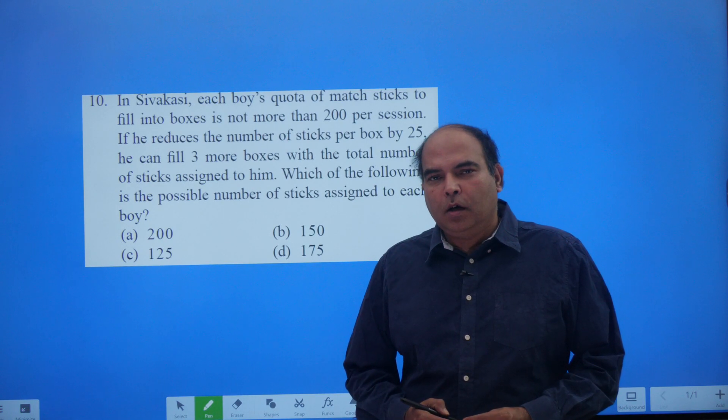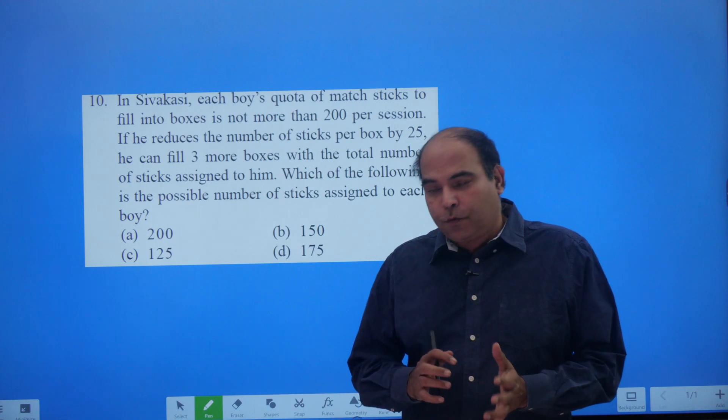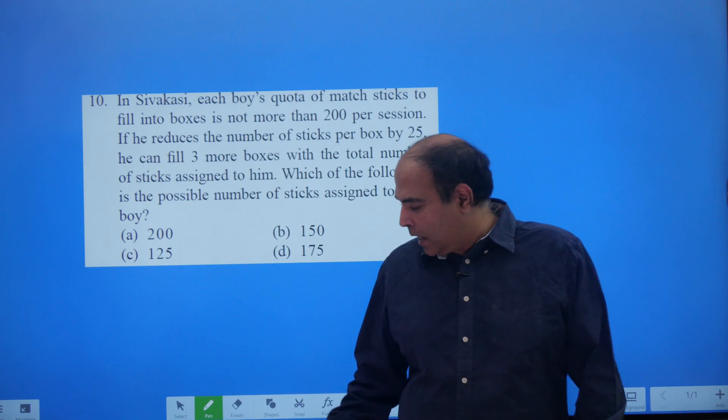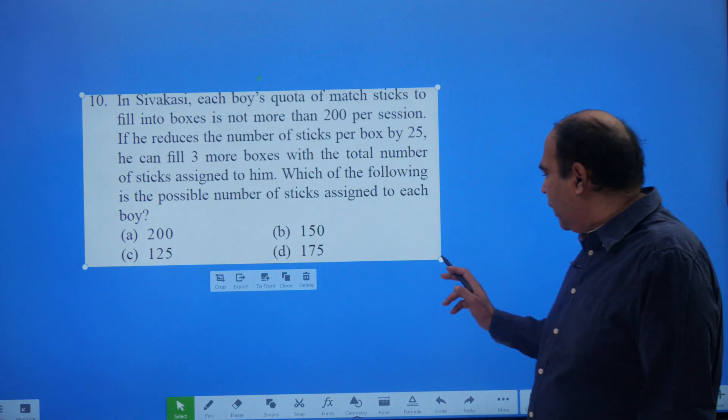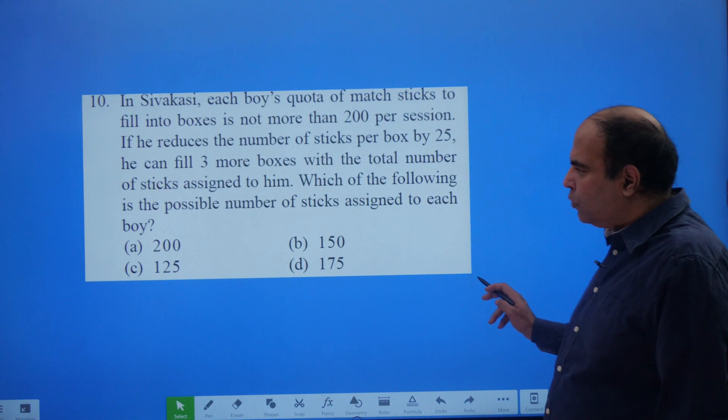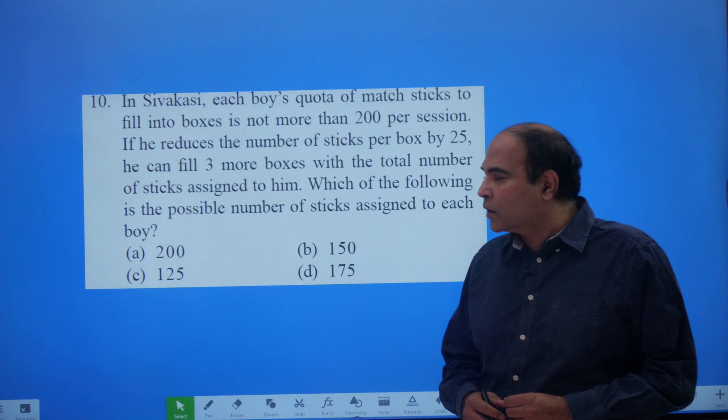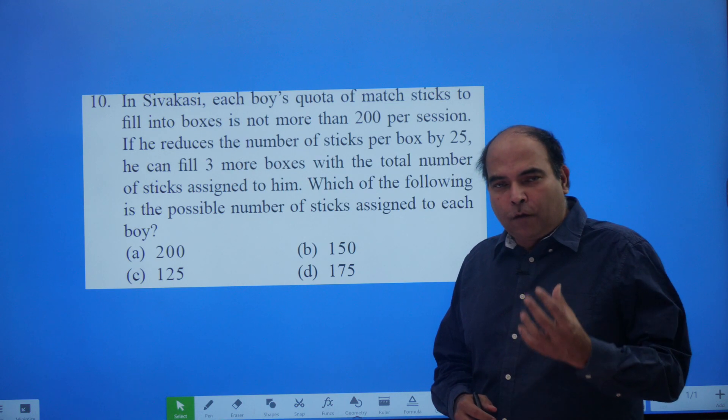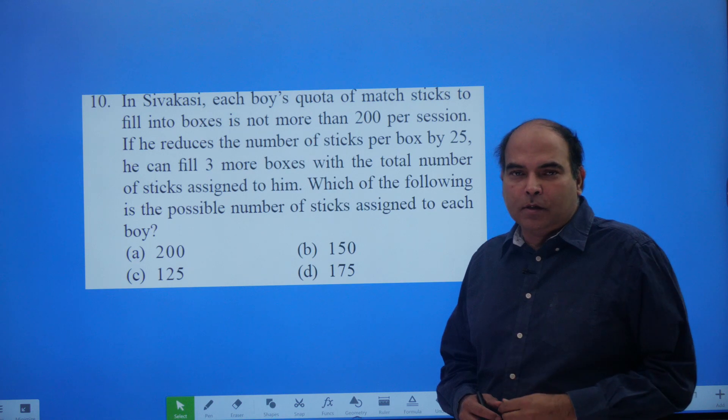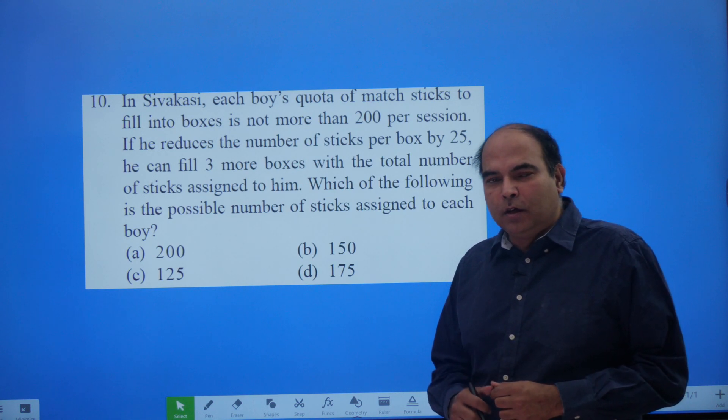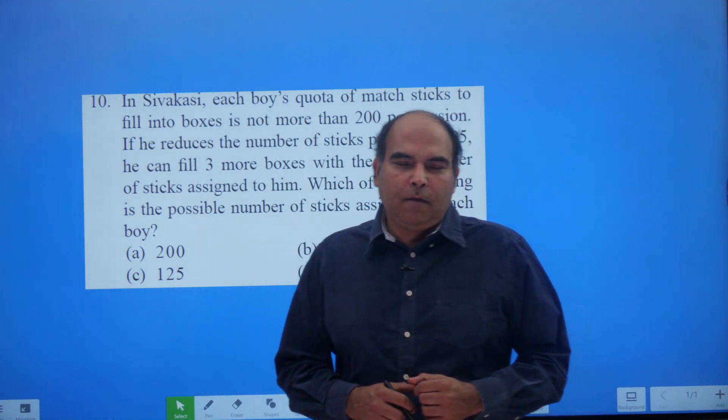Hi guys, welcome back to the course on quants, question a day. In this first season we are doing number systems and questions around number systems. The question for today is not a very difficult question, but I've chosen this CAT question, an old CAT question, because this question is symptomatic of a lot of questions where you have to find factor pairs of numbers.